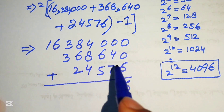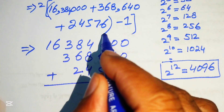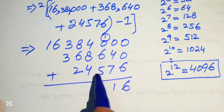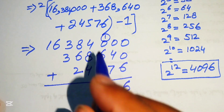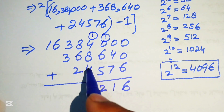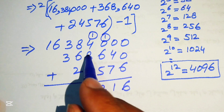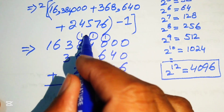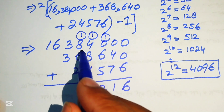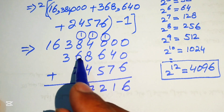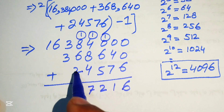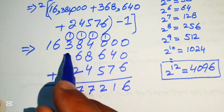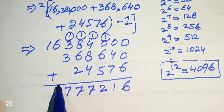Adding column by column: 6 plus 4 is 10, write 0 carry 1; 7 plus 7 plus 5 gives 12, write 2 carry 1; 4 plus 12 plus 4 gives 16 plus 1 is 17, write 7 carry 1; then 8 plus 6 is 14, plus carry gives 17 again, write 7 carry 1.